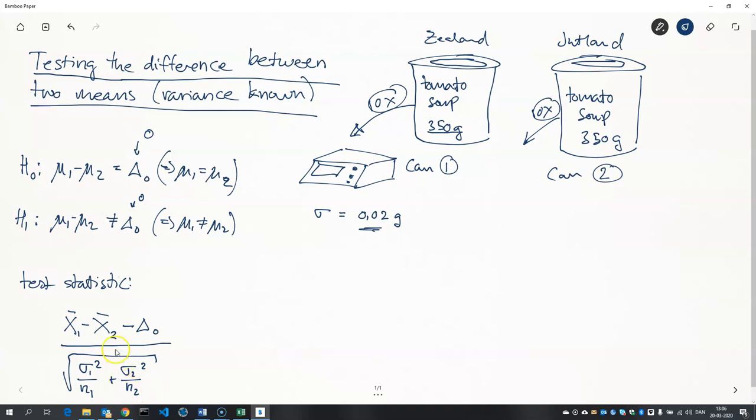Now in our case, the variance of population one and the variance of population two is the same because the variance comes from the balance here. I mean, this can does not change its weight during my experiment. It weighs the same, and so does this. So the only variance I can get is from actually the measuring device. So in my case these are the same, but in general they don't have to be. Neither do the sample sizes have to be the same. In my case they are the same because I weighed 10 times and 10 times here, but they don't have to be.